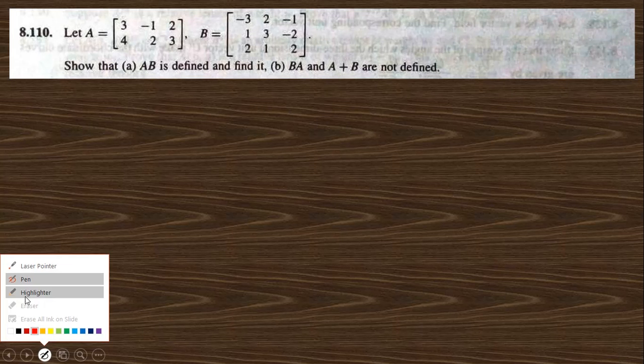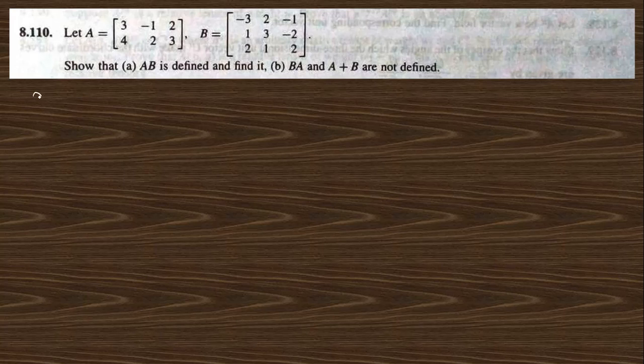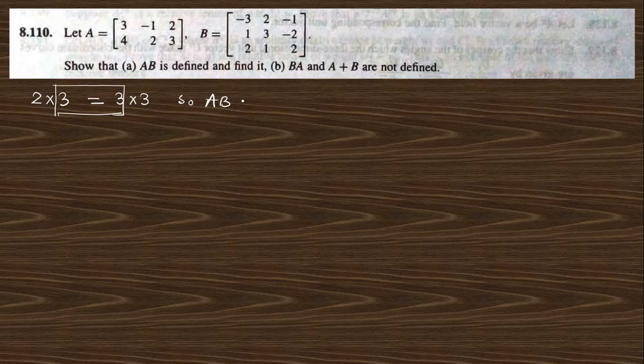Let us start with question 8.110, which gives matrices A and B and asks us to find AB and determine if it is defined. The order of matrix A is 2×3 — number of rows is 2 and number of columns is 3. For matrix B, number of rows is 3 and number of columns is 3. Since the number of columns of A equals the number of rows of B, AB is defined.